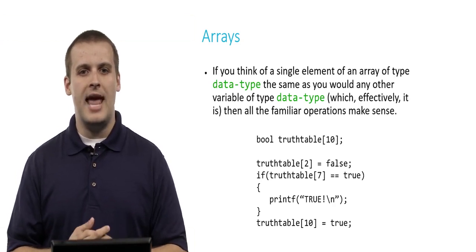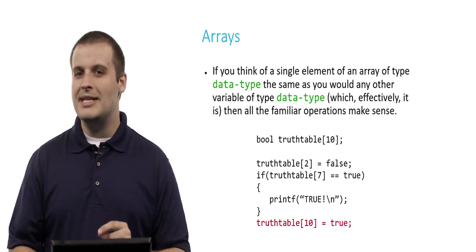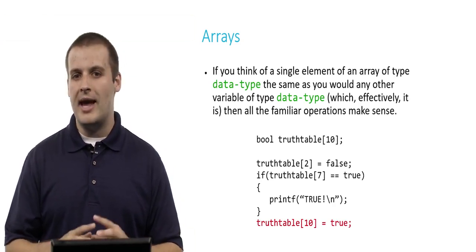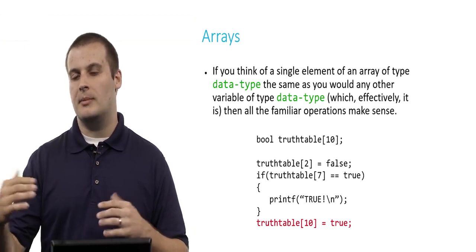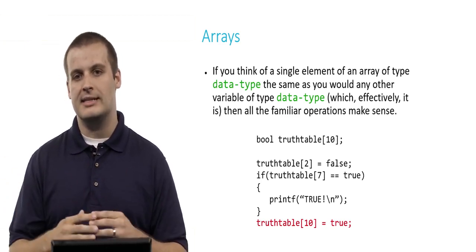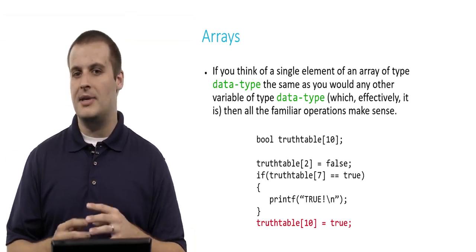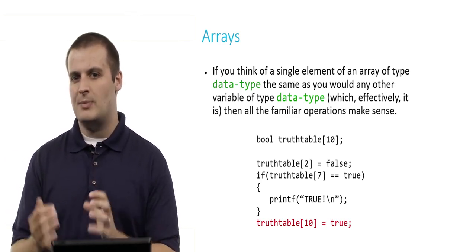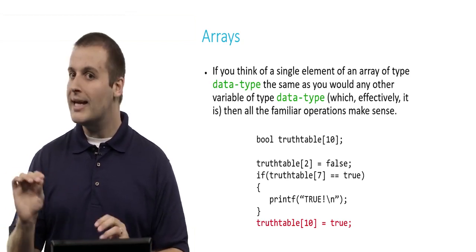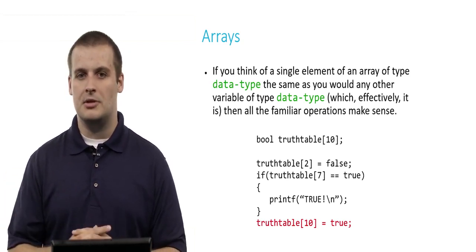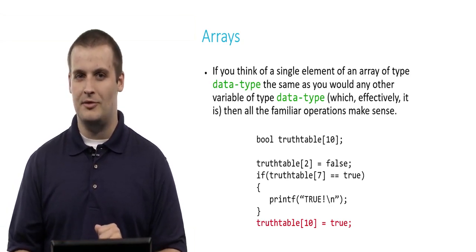I could also say 'truth_table[10] = true', but that's pretty dangerous. Because we have an array of 10 Booleans, the highest valid index the compiler gave us is 9. This program will compile, but if something else in memory exists where truth_table[10] would go, we could suffer a segmentation fault. So what I'm doing here is legal C, but not necessarily the best move.